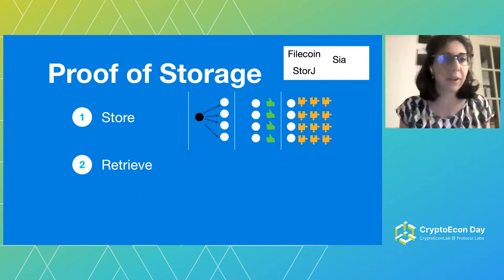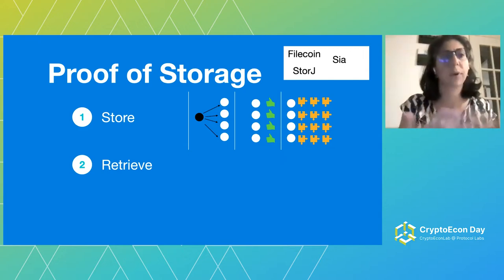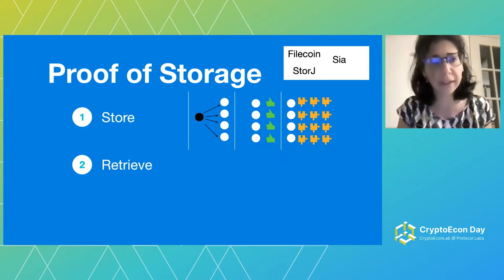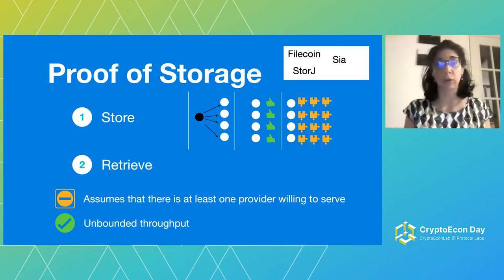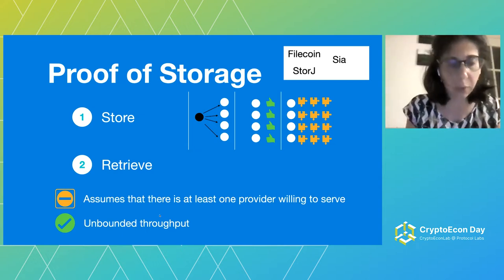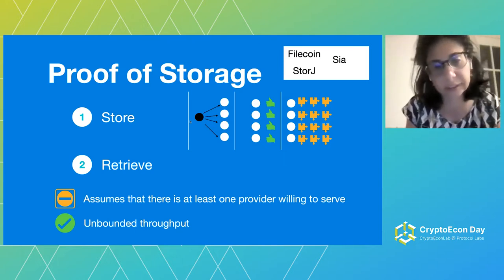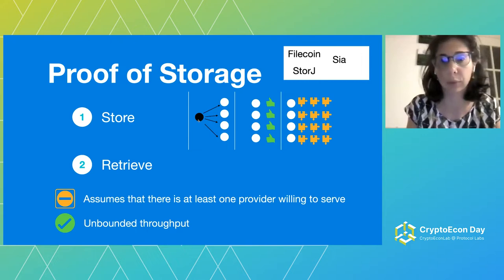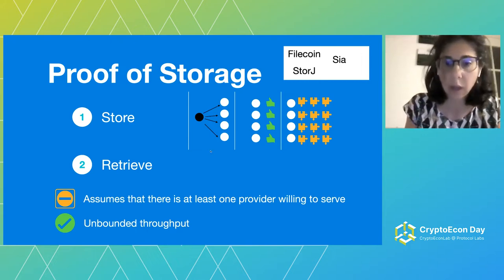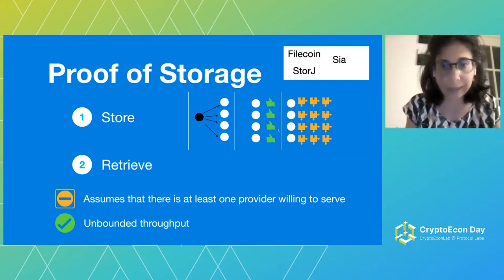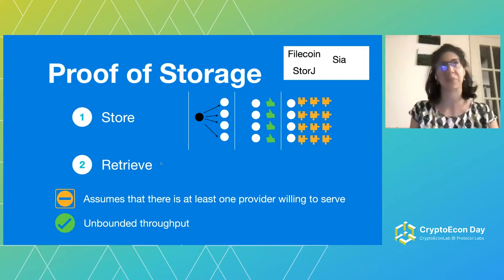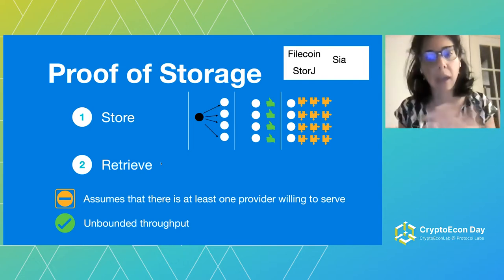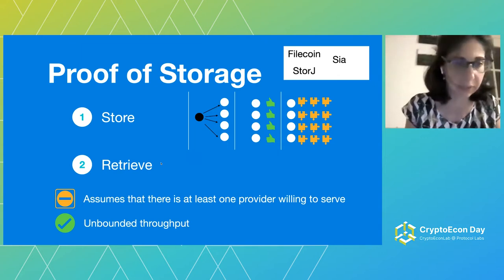Retrievability is, again, just left as an assumption — that if a few clients store your data with enough providers, there is going to be some of them available to serve back the data when you need it. The nice thing about this solution is the incentive economics, and second, it gives you unbounded throughput — so the client can now really upload any data very fast. It's not bounded by any consensus algorithm on the data itself. But as I said, retrievability is, again, somehow under-specified. It's just saying: okay, there is going to be one provider willing to serve the data. This is our assumption.